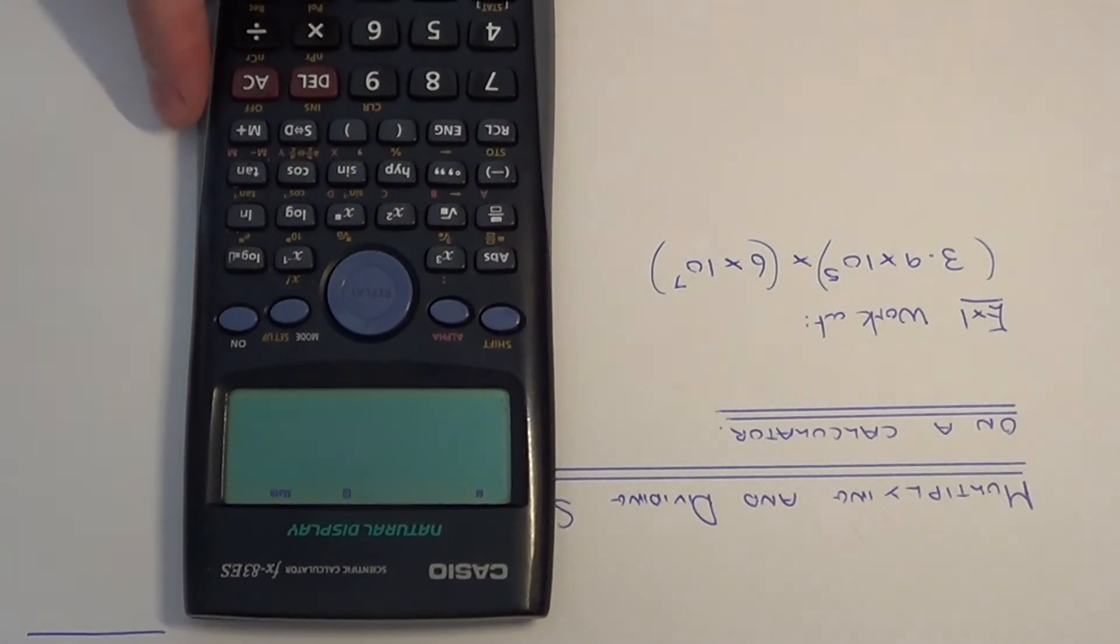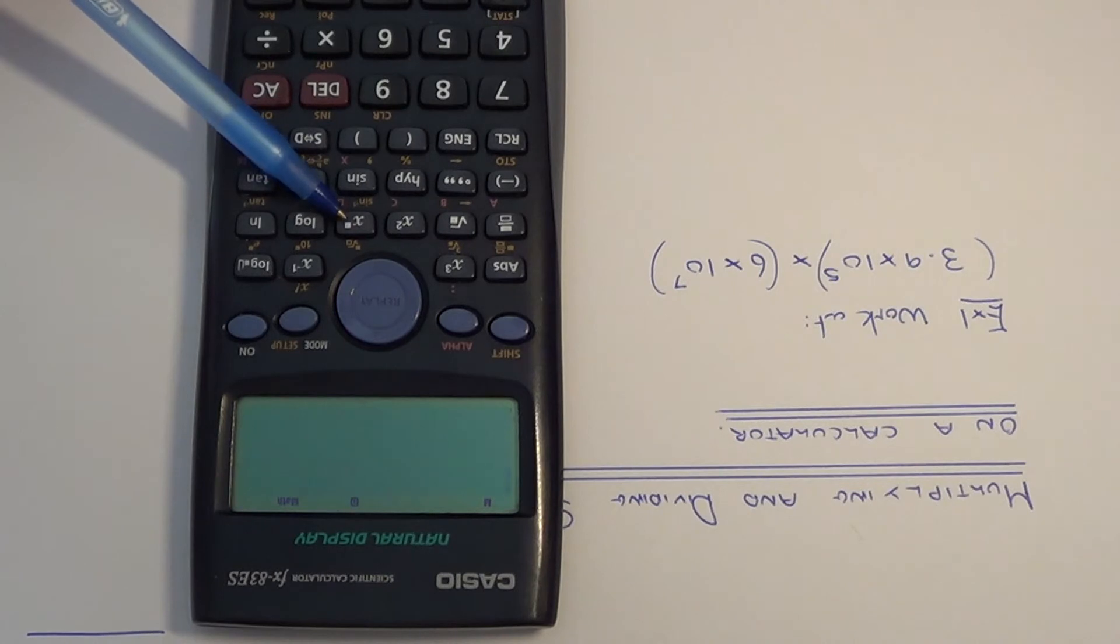The main button that you are going to use is the power button here. On my Casio calculator, it is written as x with a power box where you can type in any power that you need.